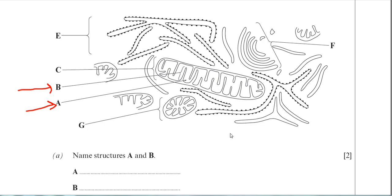Now the organelle is the mitochondrion. You need to identify A and B. So A is pointing to the middle fluid part of the mitochondrion. So that would be the matrix. And B is pointing to the inner folded membrane, which you can call the cristae or the crista. So I've just written those answers in for you.